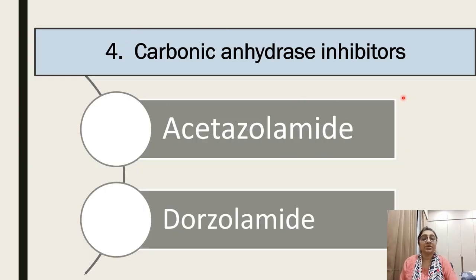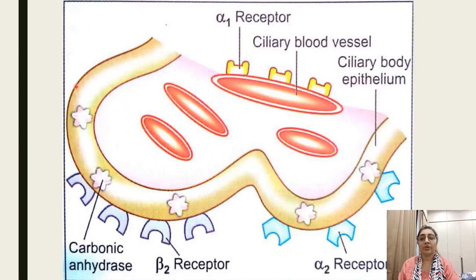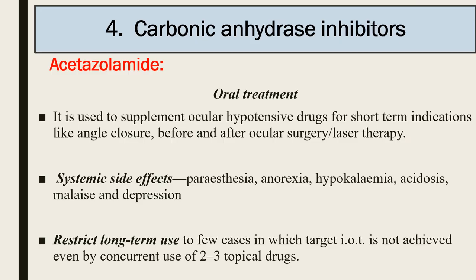Carbonic anhydrase inhibitors — acetazolamide and dorzolamide — inhibit carbonic anhydrase enzyme in the ciliary epithelium, reducing aqueous humor production. Systemic oral therapy uses acetazolamide; topical therapy uses dorzolamide. Oral acetazolamide is used to supplement ocular hypotensive drugs for short-term indications like angle closure before and after ocular surgery. Systemic side effects include paresthesia, anorexia, hypokalemia, acidosis, malaise, and depression.